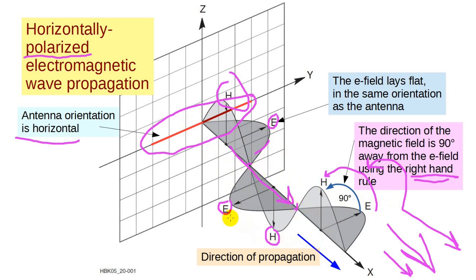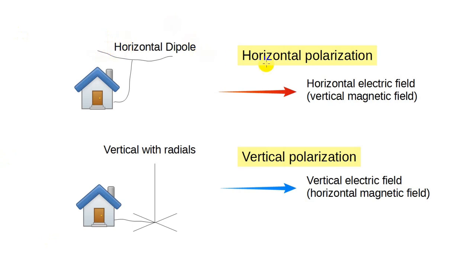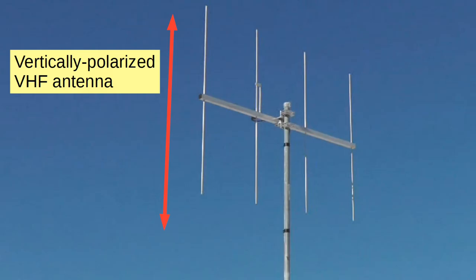Now, and this is important, a vertically polarized antenna will have a vertical electric field, and the magnetic field will then be horizontal. So, by and large, you can determine the electric wave polarization by looking at the antenna elements. A dipole provides a horizontally polarized electric field, and a vertical antenna produces a vertically polarized electric field. Here's an example of a vertically polarized VHF antenna. You can tell the polarization direction by looking at the element orientation.